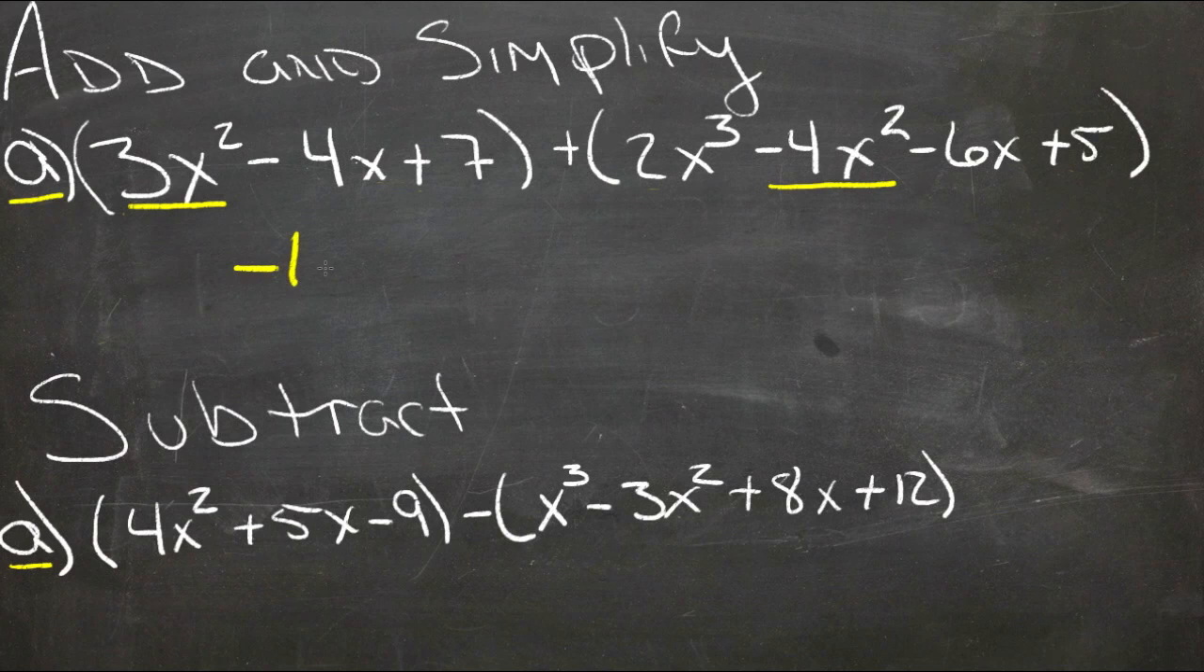So first we have 3x² in this group. Now in this group we have -4x². So if we have 3x² and we take away 4x², we get -1x². And those are done.